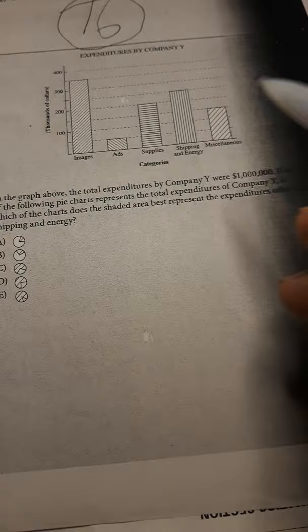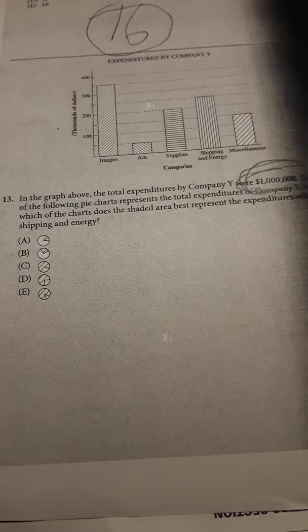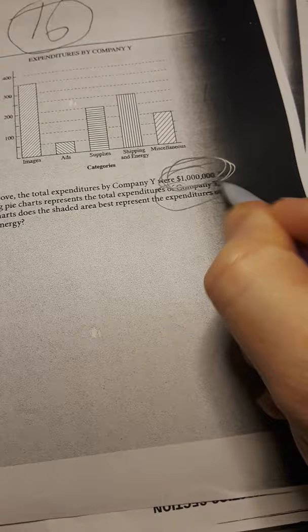The graph above is total expenditures of company Y. One million dollars. It's big. Always know the number. One million dollars of the following pie chart represents the total expenditures of the company. Which of the chart does the shaded area best represent the expenditures of shipping and energy?